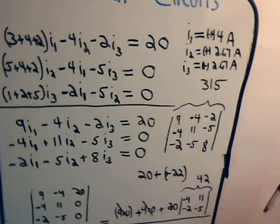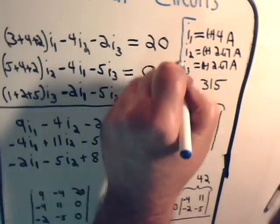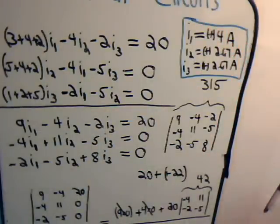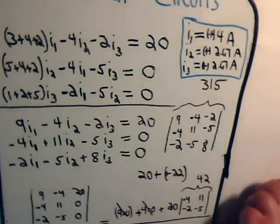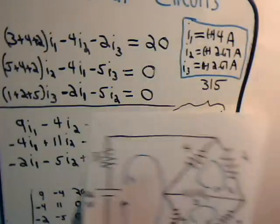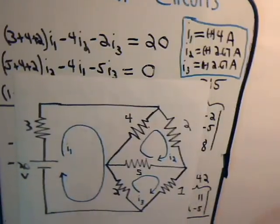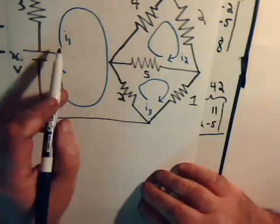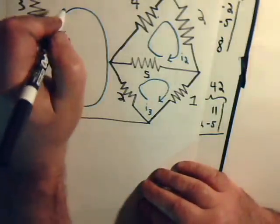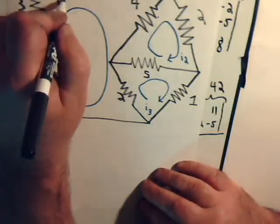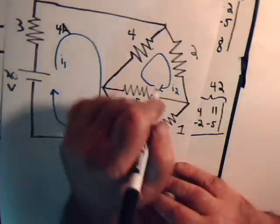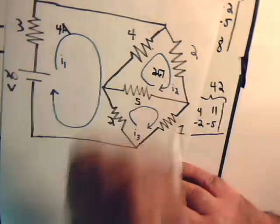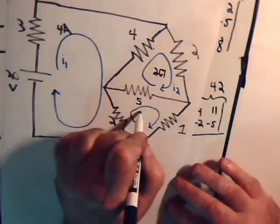So there is our three mesh currents. Now, let's just quickly go back to our original circuit. This is 4 amps. I2 is 2.67. And this is 2.67 amps.